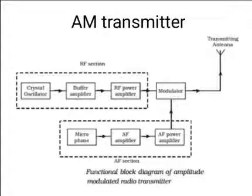Dear students, in the last session I had explained the collector modulator is used to generate an AM wave. But in this session, I will explain AM transmitter. After modulation, the radio waves are transmitted over a long distance with the help of the electronic circuit called transmitters. The simplest form of transmitter consists of an oscillator generating a high frequency wave connected to an antenna.